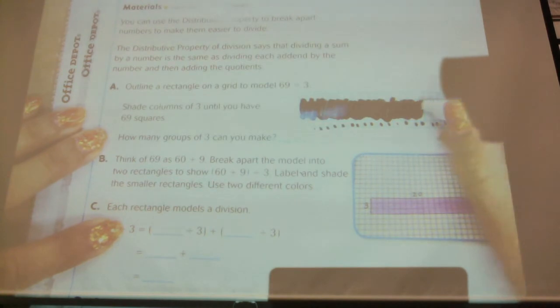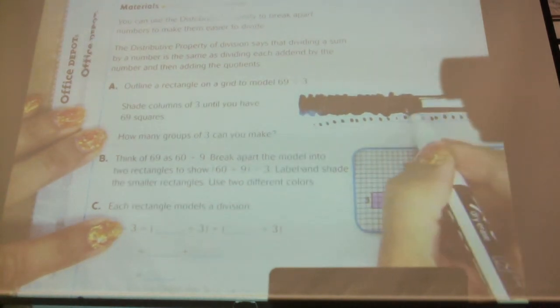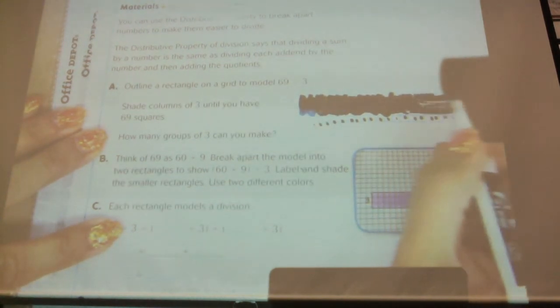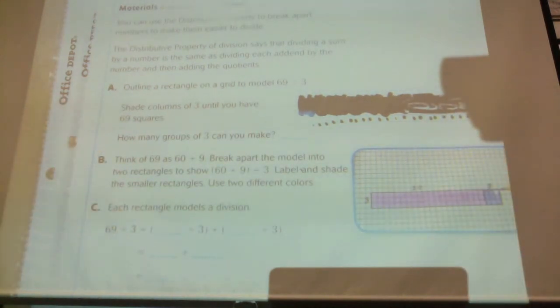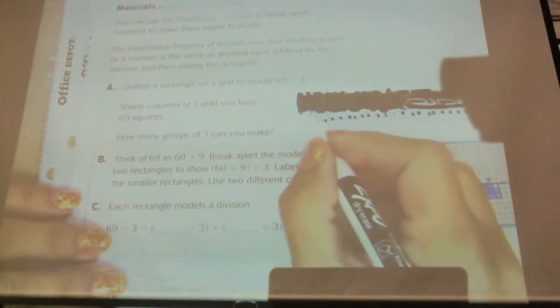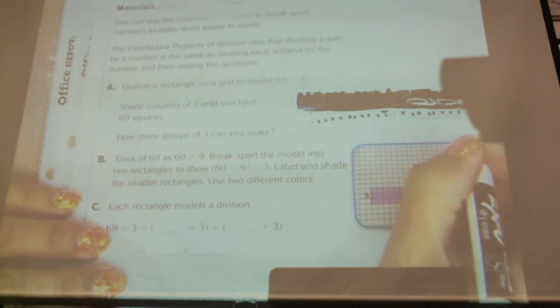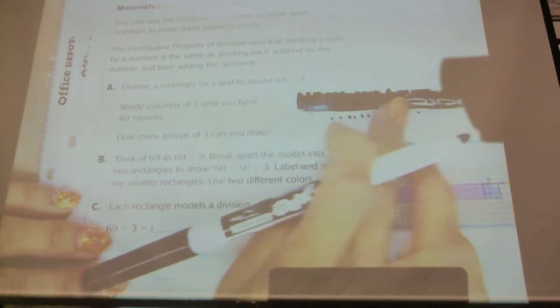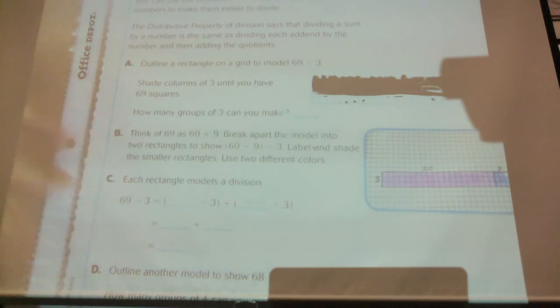I'm going to shade all the way there. Okay, I've counted 69 boxes all the way across in columns of three. How many groups of three did I make there? Do you guys remember from yesterday? How many groups of three did I make then?